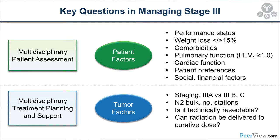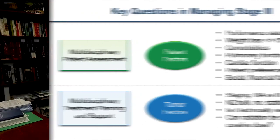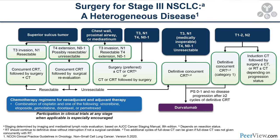Tumor factors also weigh heavily with locally advanced disease. Do we have the right stage? How was the patient staged — was a 3A patient ruled out for stage 3B and 3C disease? If we truly have N2 disease, what's the bulk? Is it single-station or multi-station? Is it technically resectable without a pneumonectomy? Can radiation be delivered to a curative dose? These are all questions we wrestle with at our multidisciplinary tumor boards.